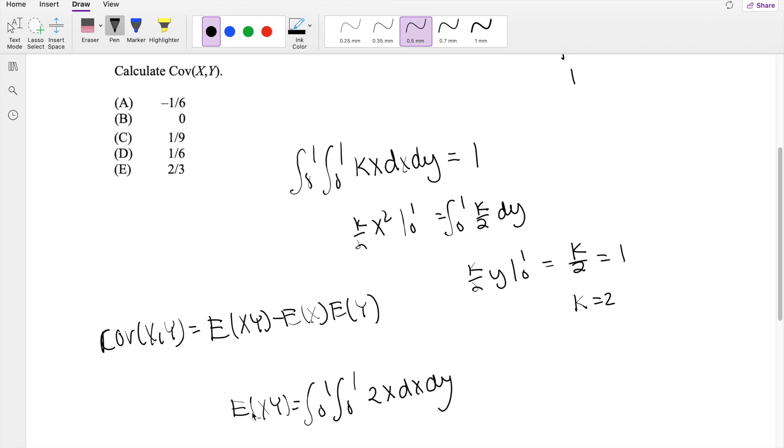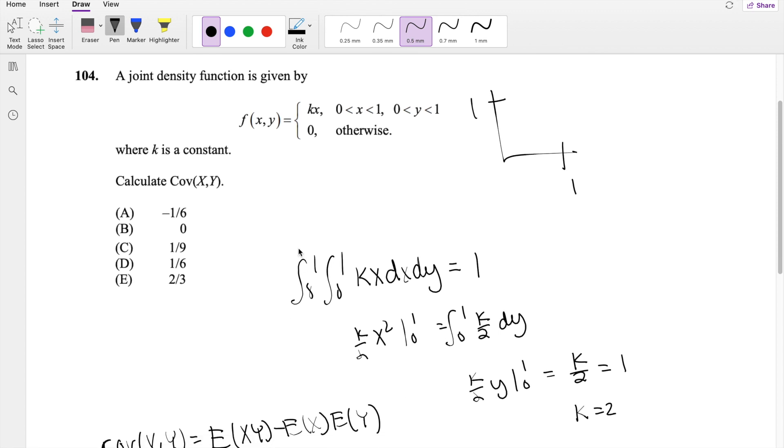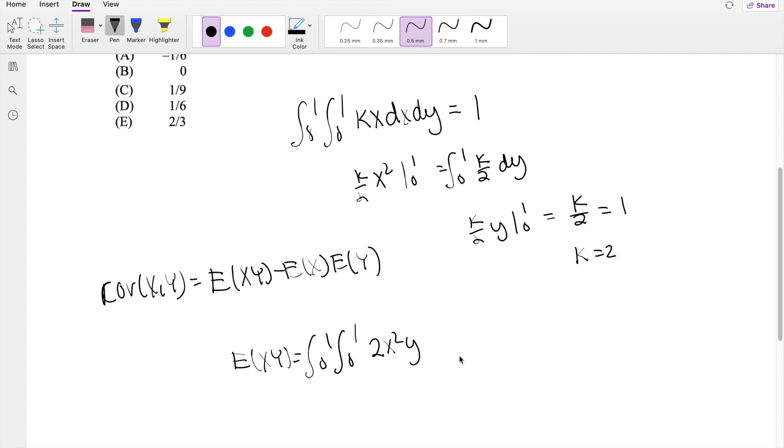But the thing is, we have to multiply by x and y, so that's going to be equal to 2x times x and y, so it's going to be 2x squared y. Do you agree? Because now k is equal to 2, so our function is going to be 2x.